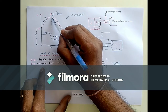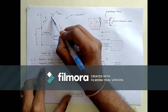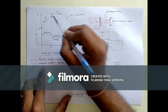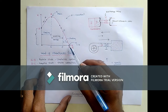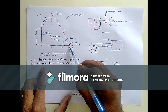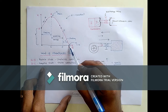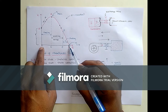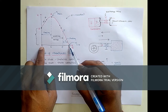At point B we are getting the maximum efficiency because we are getting the maximum head. At the zero discharge point we will get minimum or zero efficiency because we are not getting any kind of head.